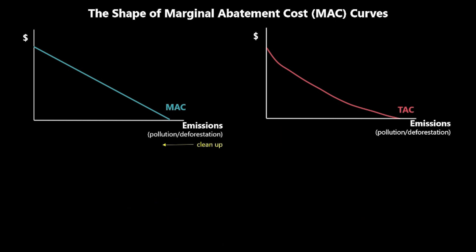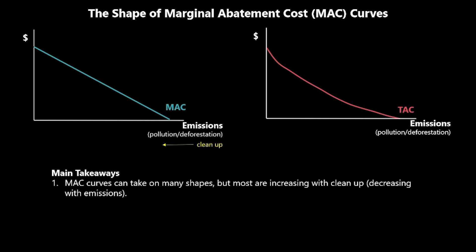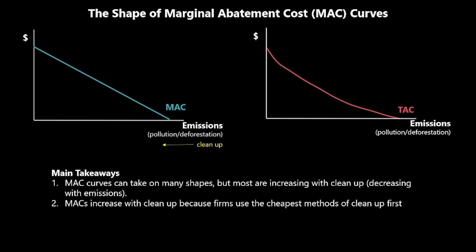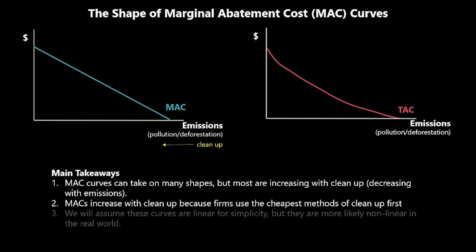To summarize, the main takeaways are: first, marginal abatement cost curves can take on many shapes, but most are increasing with the cleanup of emissions. Second, marginal abatement cost curves increase with cleanup because firms use the cheapest methods of cleanup first. We will assume these curves are linear for simplicity, but they are more likely non-linear in the real world.